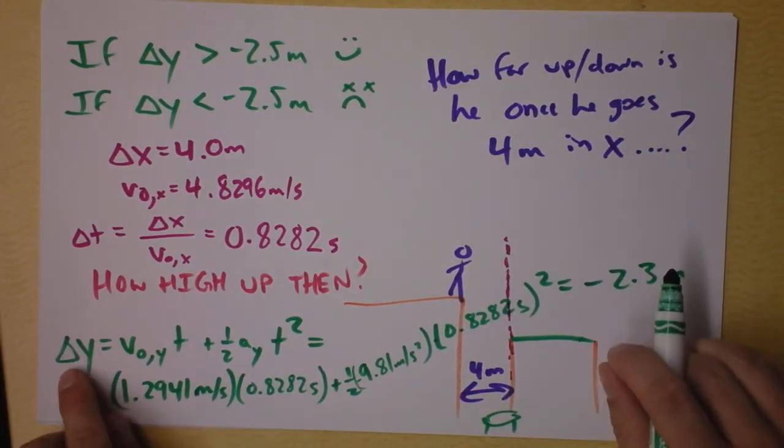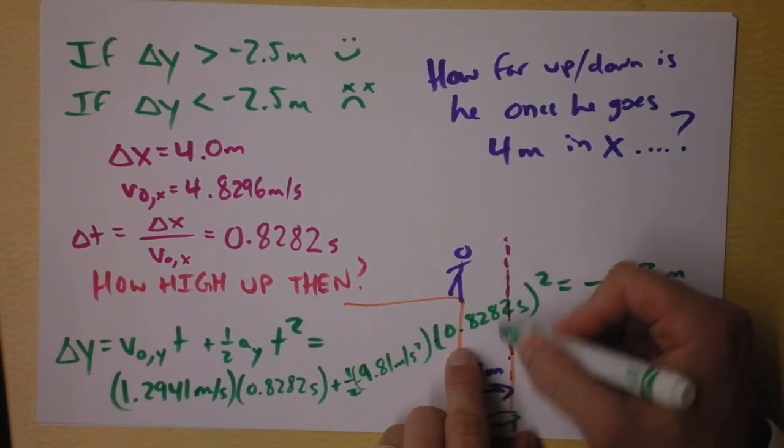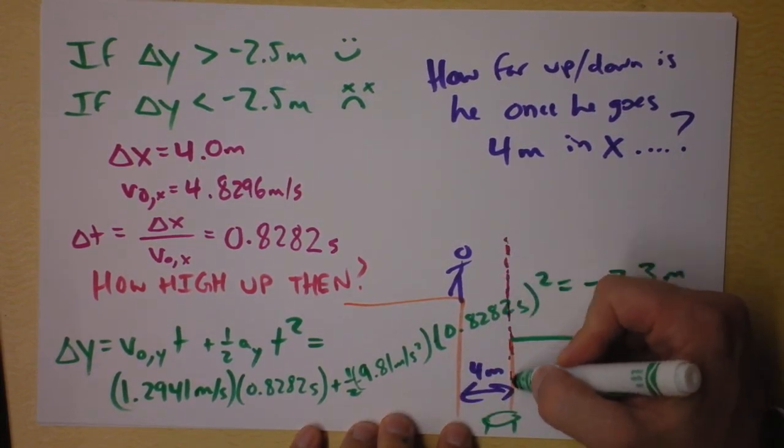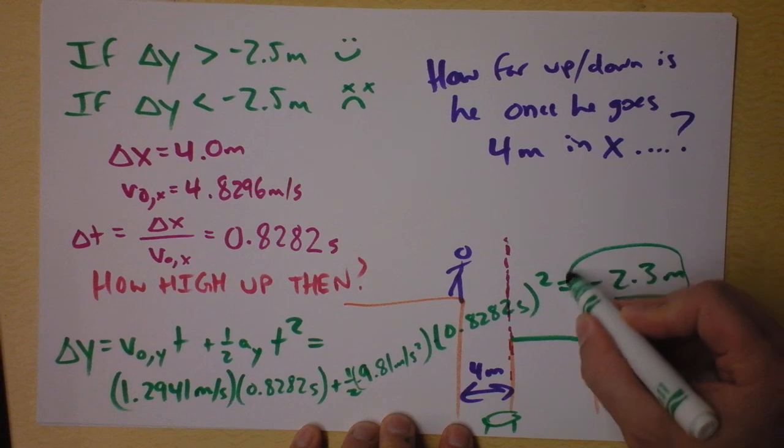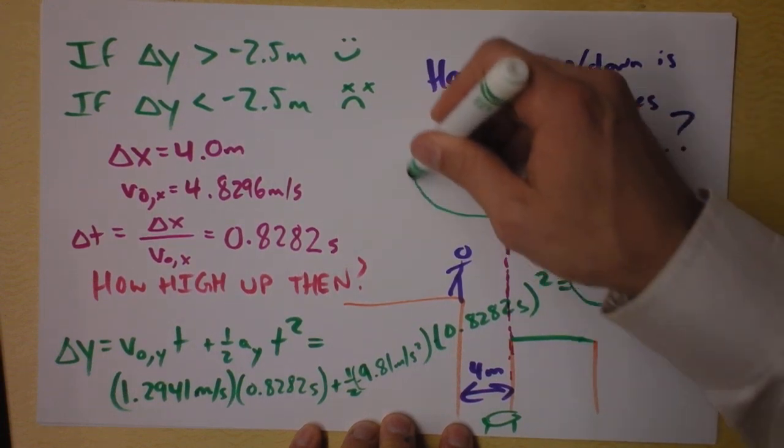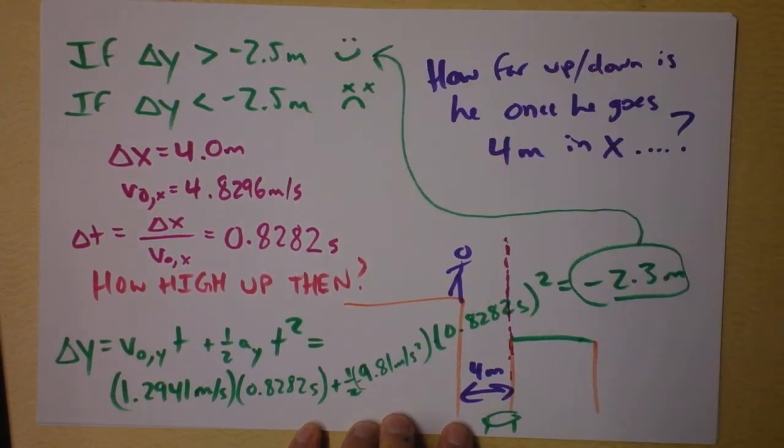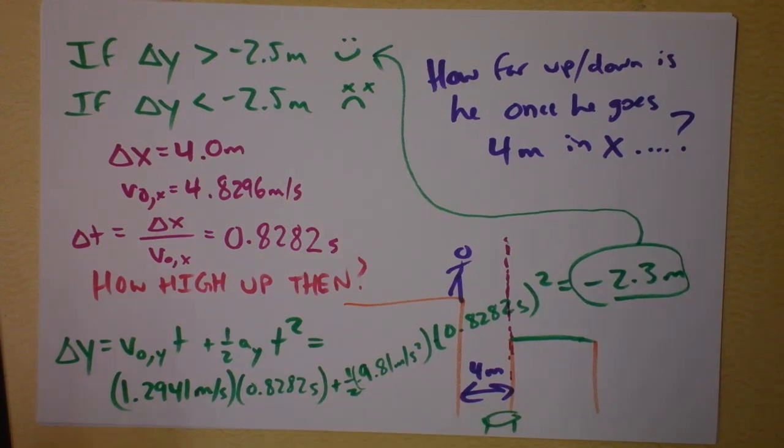That is where Ben Colleen is in height when he gets to this plane right here. And it seems to me like negative 2.3 is greater than negative 2.5, so he's going to be fine. Yay!